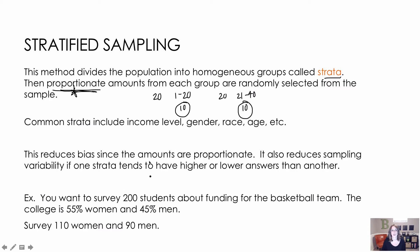Stratified sampling is all about putting people into groups based on a certain stratum — income level, gender, race, age, etc. — and then making sure those proportions stay consistent in your sample.